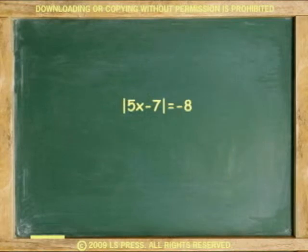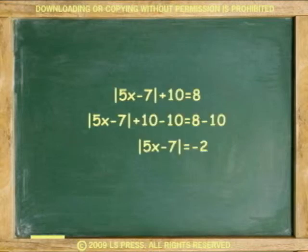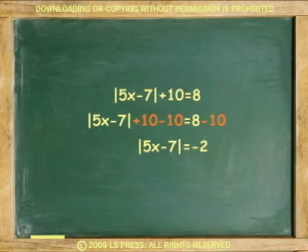Because the answer to an absolute amount is always positive, equations equal to a negative outcome cannot be solved. For example, absolute 5x minus 7 equals negative 8 — this equality calls for a negative outcome, so it cannot be done. Trying another example, we see that even if it starts positive, the result is also negative, because when the 10 is removed to start the solution, a negative 2 shows up as the outcome. Cannot be done either.